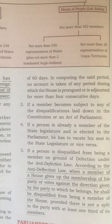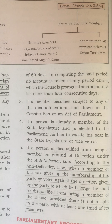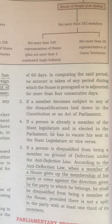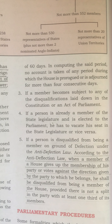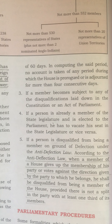Fifth point: if a person is disqualified from being a member on the ground of defection under the anti-defection law. Please underline these lines. According to the anti-defection law, when a member of a house gives up the membership of his party — meaning he is being unfaithful or not loyal to his party — or votes against the direction given by the party to which he belongs and is not following those directions, he shall be disqualified from being a member of that particular house, provided there is not a split in the party with at least one third of its members. In case of defection under the anti-defection law, a person's seat will be vacated.